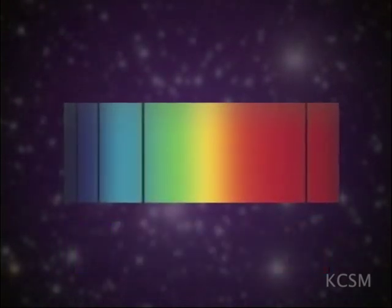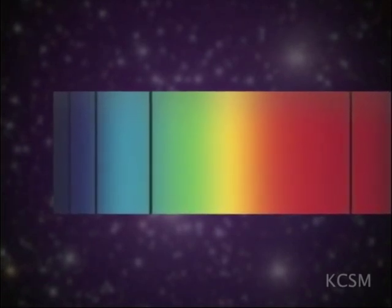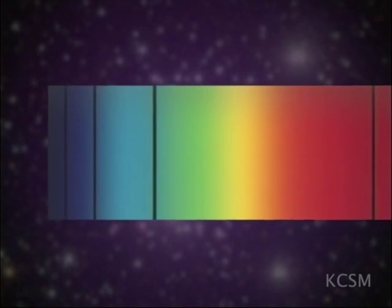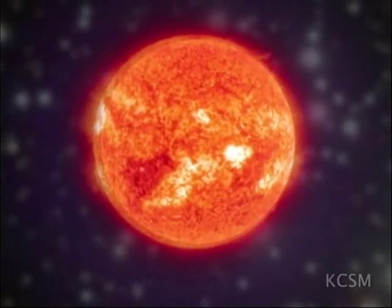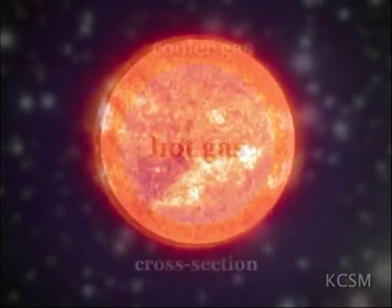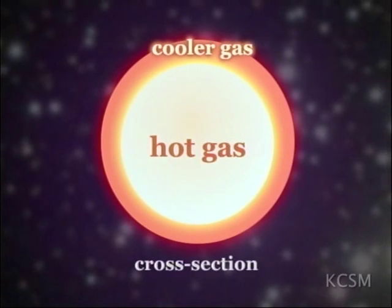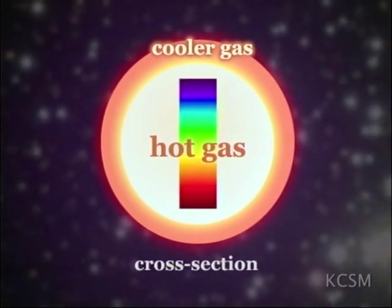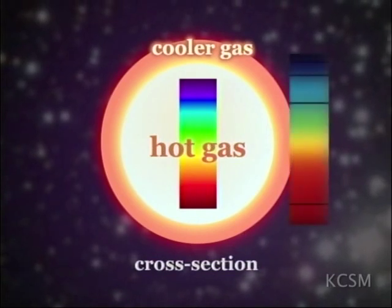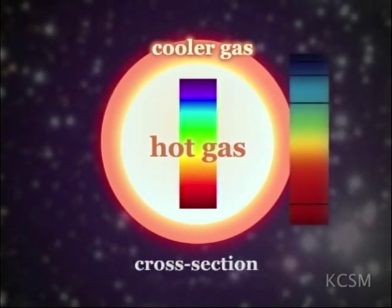Instead of bright emission lines at specific energies, absorption spectra show dark lines where energy is being absorbed by the atoms. Stars produce absorption spectra. The surface of a star is cooler and thinner than the gas underneath. The light from the hot, dense gas inside a star produces a continuous spectrum, and the cooler gas above it absorbs specific wavelengths of that light, which appear as gaps in the underlying continuous spectrum.